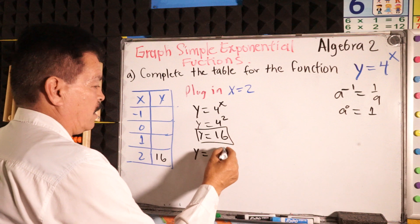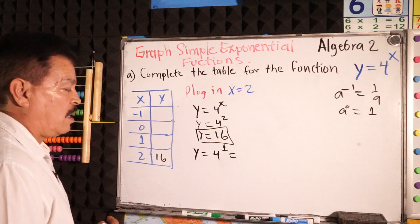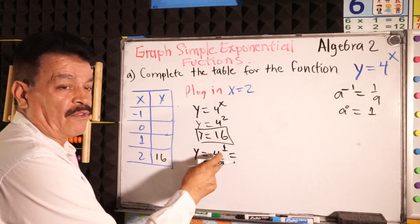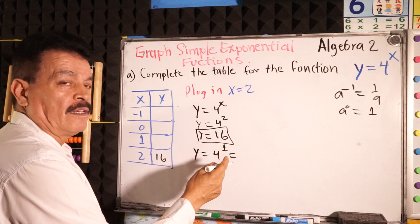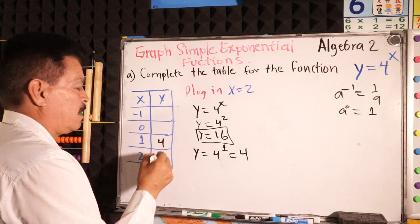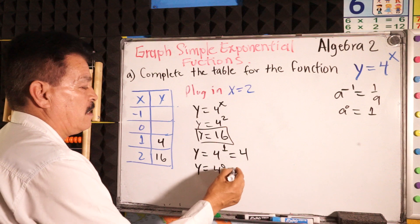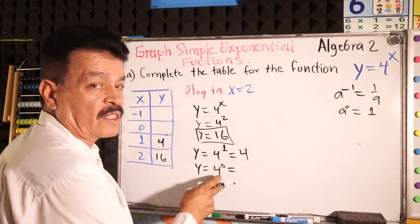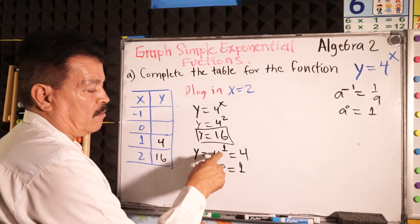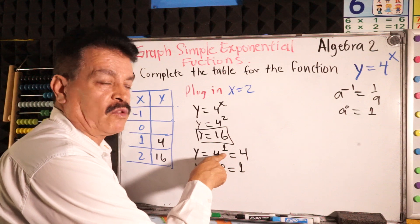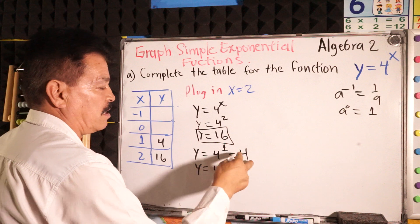Y equals 4 to the 1 power. When you raise a number to the first power, it is the same value — so it equals 4. Then y equals 4 to the 0 power. All numbers to the 0 power equal 1, so the answer is 1.